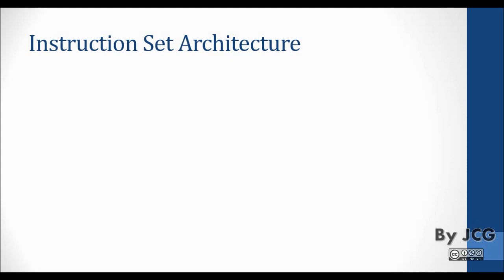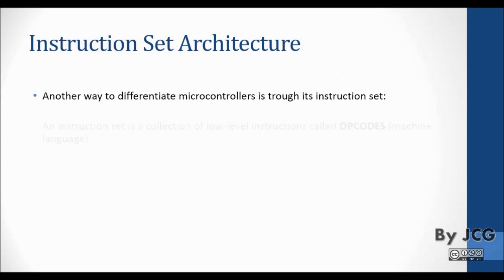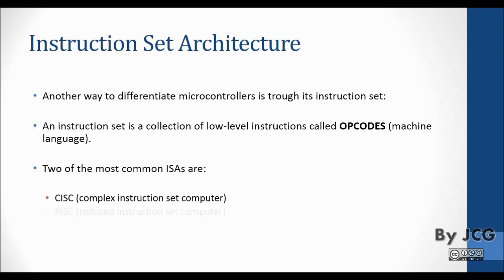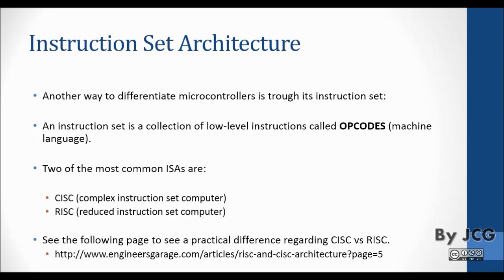Now let's talk about instruction set architecture. Another way to differentiate a microcontroller is through its instruction set. An instruction set is a collection of low-level instructions called opcodes, which is machine language. Two of the most common instruction set architectures are CISC — Complex Instruction Set Computer — and RISC — Reduced Instruction Set Computer. CISC has more complex operations that can perform different operations on different types of data. RISC tries to implement only the most used operations, relying on routines to cover the problem of having fewer instructions. I recommend you see the following page to see a practical difference between CISC and RISC.